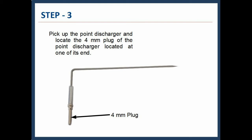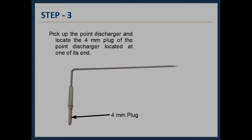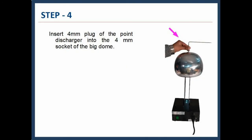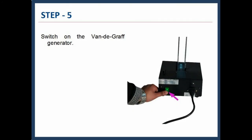Step 23: Pick up the point discharger and locate the 4mm plug of the point discharger located at one of its end. Step 24: Insert 4mm plug of the point discharger into the 4mm socket of the big dome. Step 25: Switch on the Van de Graaff generator.